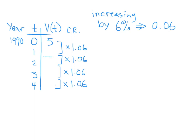You have enough information to come up with a formula. We could do 5 times 1.06 and get $5.30 after the first year. Multiply by 1.06 again and you get $5.62. However, it asks us to come up with a formula — an equation that models the value of the card given the number of years since the beginning. Time zero refers to the year 1990.